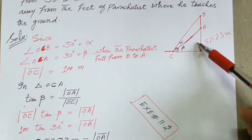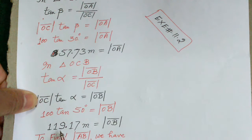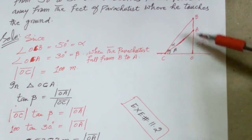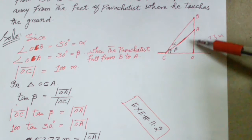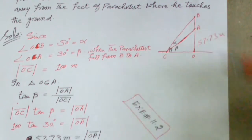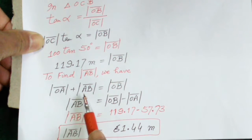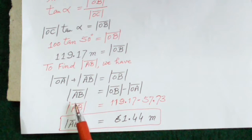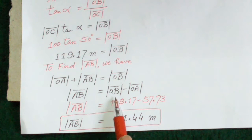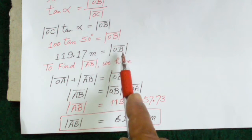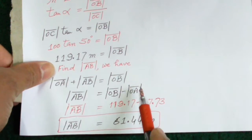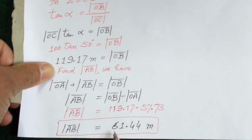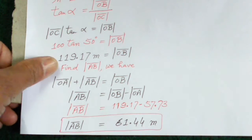OB is equal to 119.17 meters. To find AB, we subtract OA from OB. From the figure, OA plus AB equals OB. Therefore AB equals OB minus OA, which is 119.17 minus 57.73 meters. After calculation, AB is equal to 61.44 meters, which is the required answer.